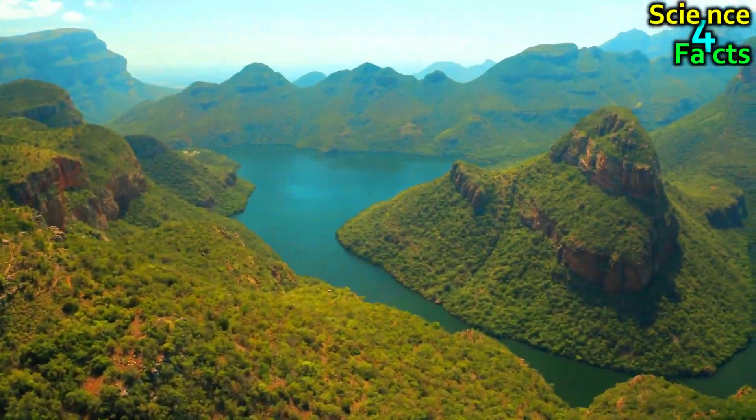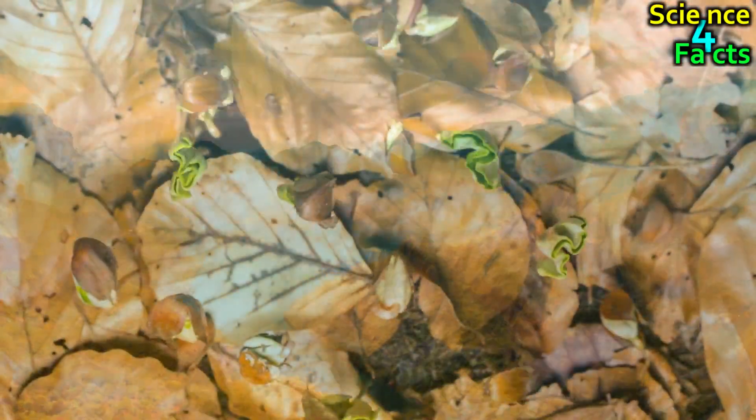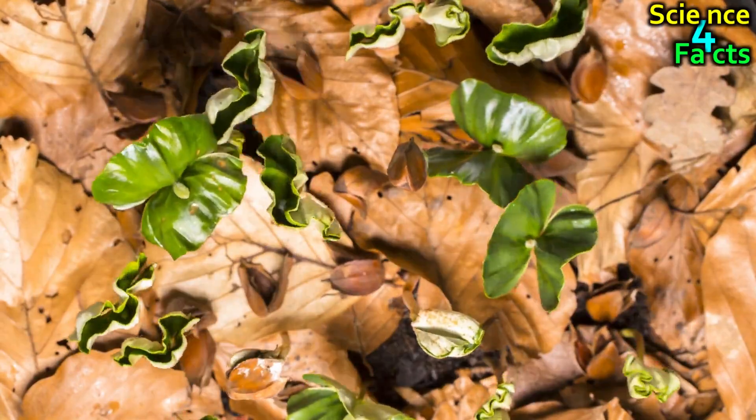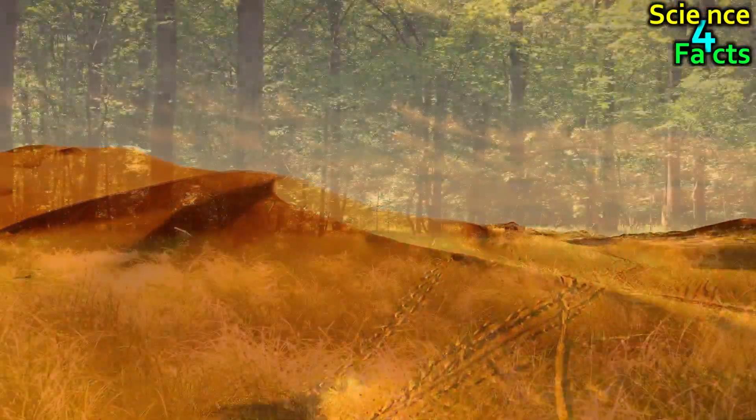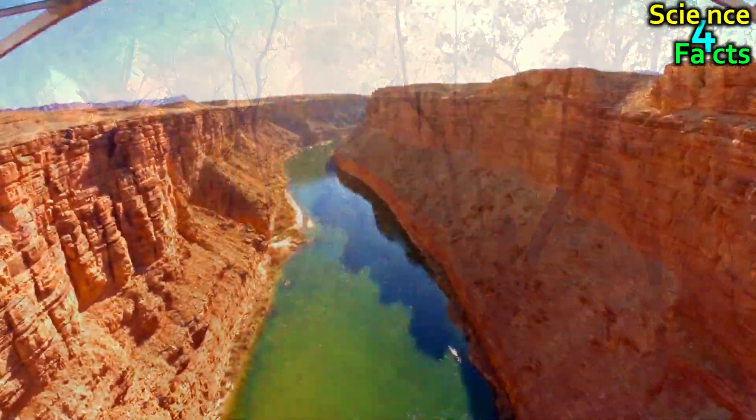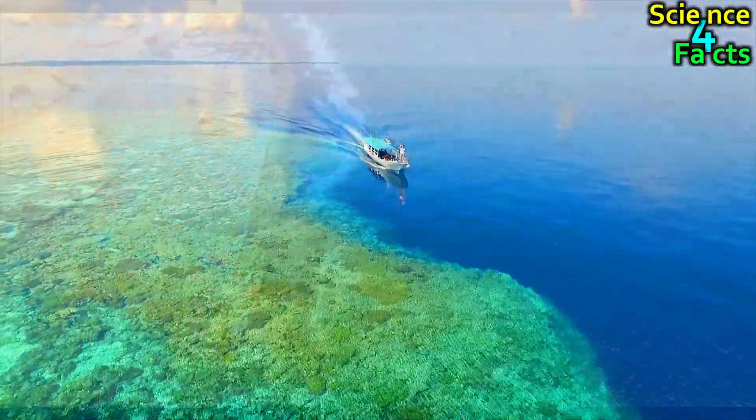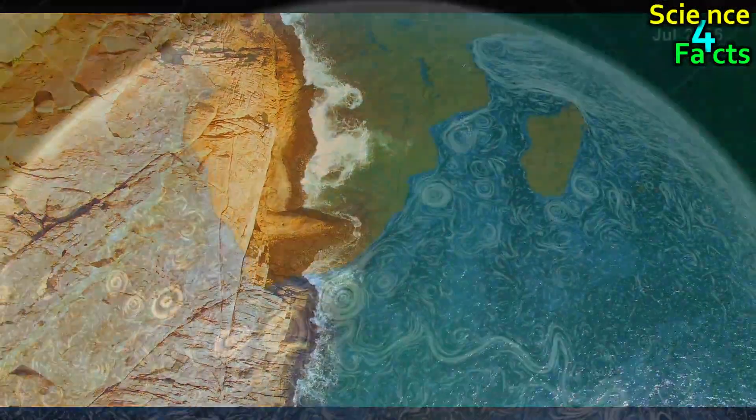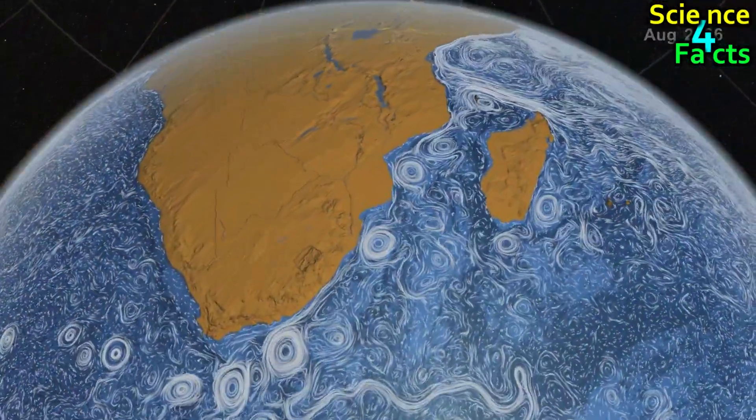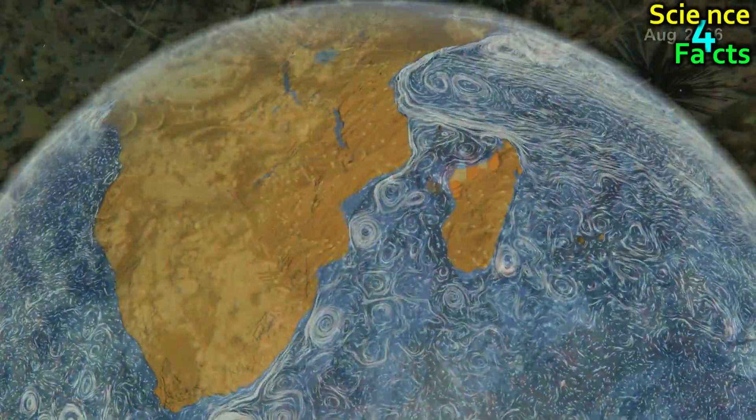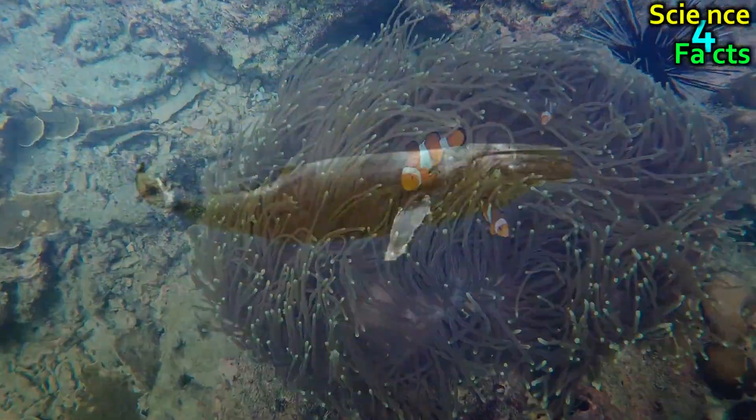Earth's surface is also home to a variety of different biomes, each with its own unique set of characteristics and life forms. These biomes include deserts, grasslands, forests, tundra, and aquatic ecosystems, such as oceans and rivers. The planet's oceans cover more than 70% of its surface, and are home to an enormous variety of marine life, from tiny plankton to giant whales.